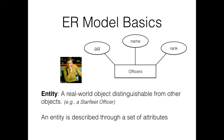An entity is any sort of real-world object — something that you can distinguish from other objects. For example, a Starfleet officer. Every entity has a set of attributes. So here I have an officer ID, a name, and a rank. James Kirk would have officer ID 1, name James Kirk, and rank Captain.